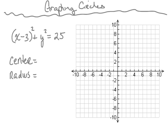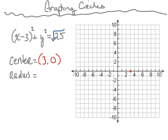Let's take a look at one more example. We have the equation x minus 3 squared plus y squared equals 25. We'll start by finding the center, which is going to be at 3, 0. Now we're going to find the radius by taking the square root of 25, which is 5. From the center we move 5 to the right, 5 to the left, 5 up, and 5 down. Once we have these four points, we connect the dots making our circle. This is the circle for the equation x minus 3 squared plus y squared equals 25.